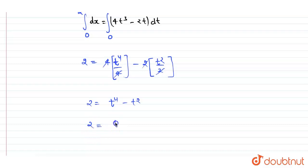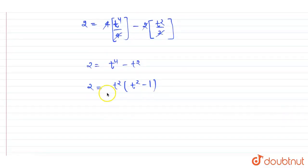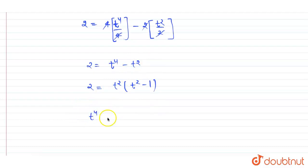Taking t² as a common factor, we can write t²(t² minus 1) equals 2. Rearranging, this becomes t⁴ minus t² minus 2 equals 0.